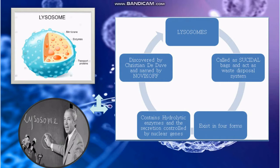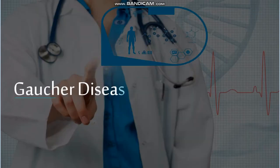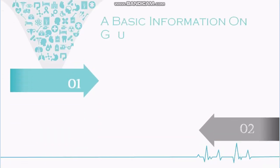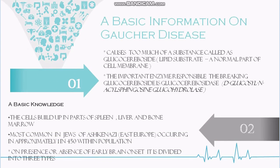These disorders are collectively known as lysosomal storage disorders. Basic information on Gaucher disease: it causes too much of a substance called glucocerebrosidase lipid substrate, a normal part of the cell membrane. The important enzyme responsible for breaking down glucocerebrosidase builds up in parts of the spleen, liver, and bone marrow. It is most common in Jews of Ashkenazi East European origin, occurring in approximately 1 in 450 within that population.